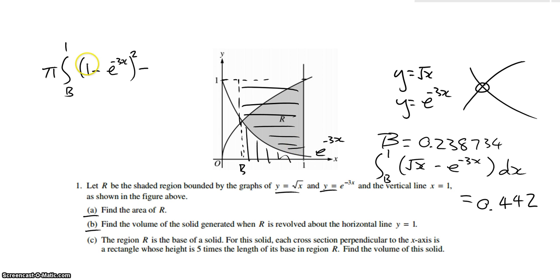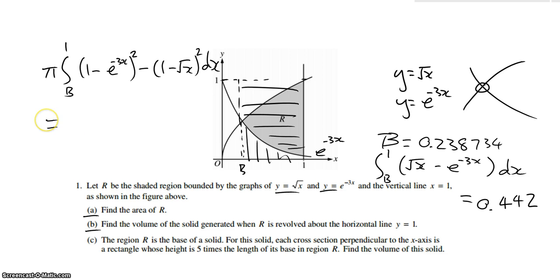Minus the same thing with the other function — 1 minus square root of X, squared. At this point we could do simplification, but it's better to just plug it into the calculator and let it do the work. That should come out to be 1.423.